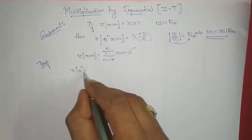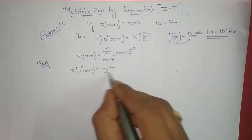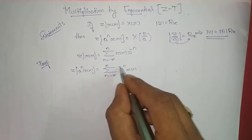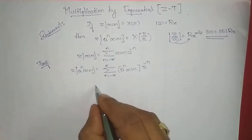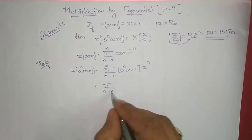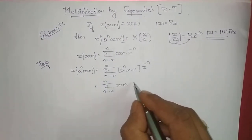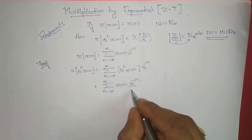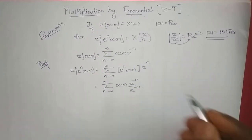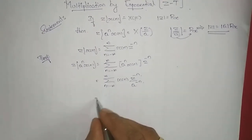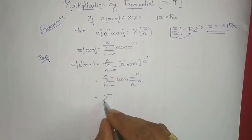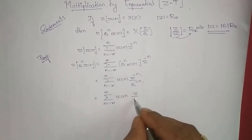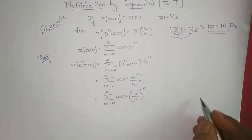Now what we need to prove is the Z-transform of A^n · x[n]. This equals the summation n from minus infinity to infinity of A^n · x[n] · Z^(−n). This equals summation of x[n] · Z^(−n) · A^n, and writing A^n as 1 divided by A^(−n), we can take the minus n outside the bracket, giving summation of x[n] · (Z/A)^(−n).